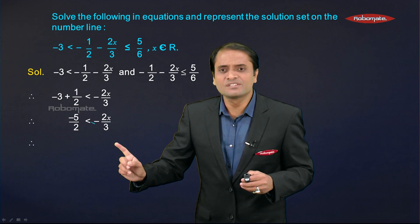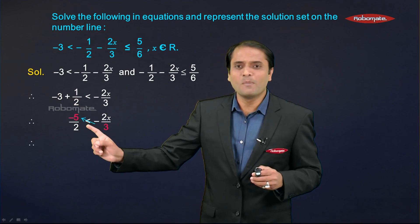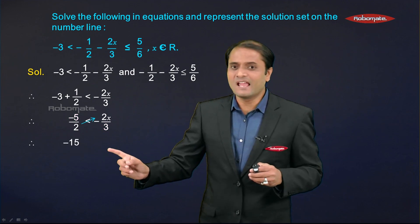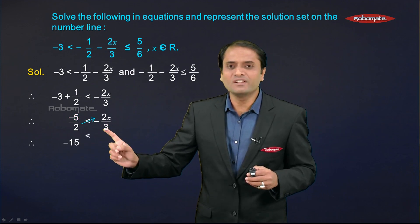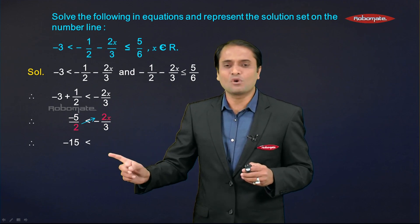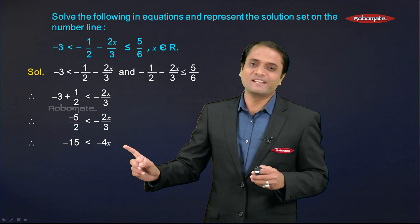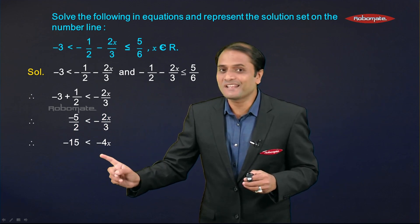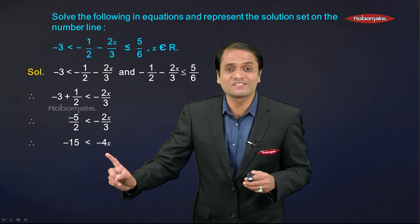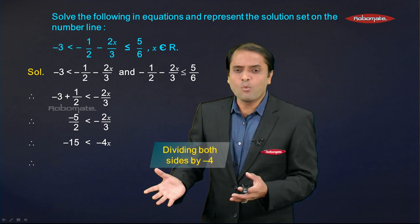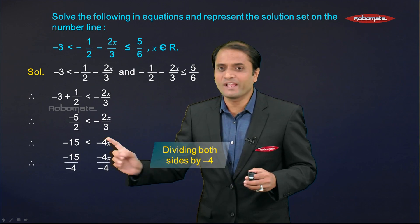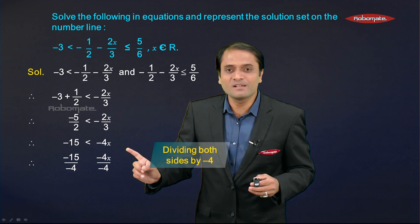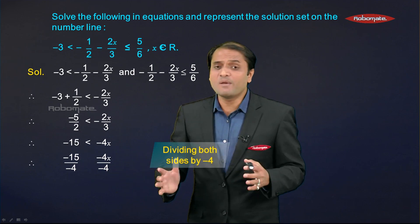In the next step, cross-multiply: 3 goes with −5, giving −15 on the LHS, and 2 goes with −2x, giving −4x on the RHS. So we have −15 < −4x. To solve further, divide both sides by the coefficient of x, which is −4.